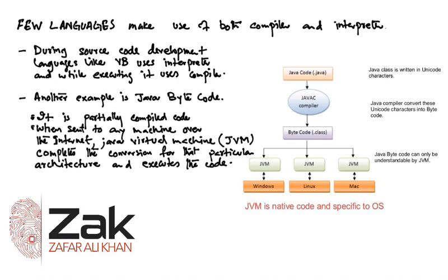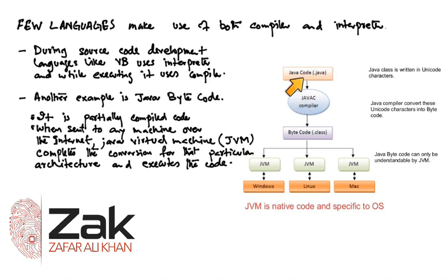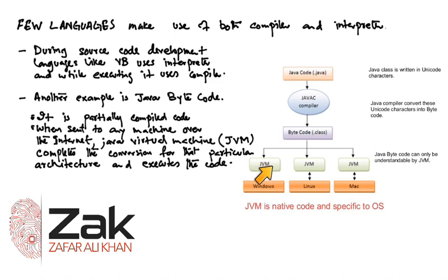What actually happens is that you write the Java code in Unicode characters or in text, and then Java compiles it. But it does not compile it fully to the executable form — it compiles it halfway. That half-compiled Java code is called bytecode. Then that bytecode is kept somewhere on the internet, and whatever machine is executing that program downloads and then interprets that bytecode and executes it.